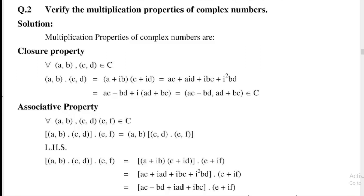Second property: Associative property. For all a, b, c, d, e, f belonging to C, we need to show (a,b)·(c,d)·(e,f) = (a,b)·[(c,d)·(e,f)]. Taking the left-hand side: (a,b)·[(c,d)·(e,f)] equals (a + ib)(c + id)(e + if).